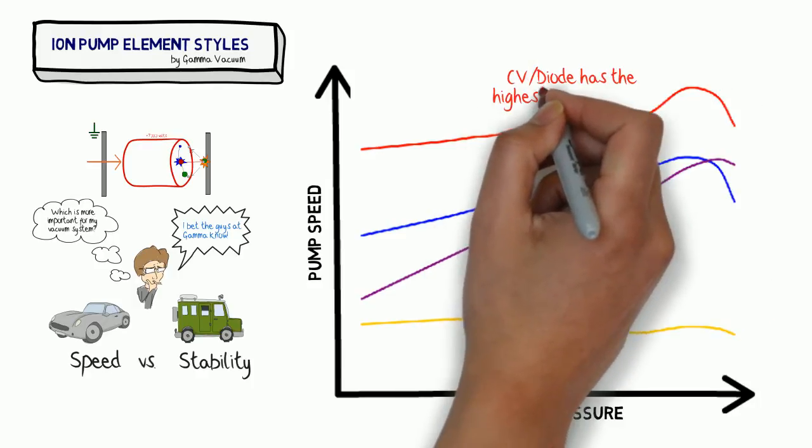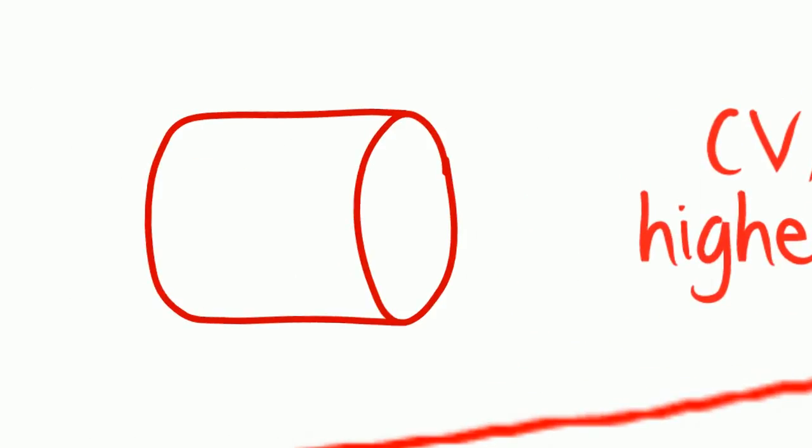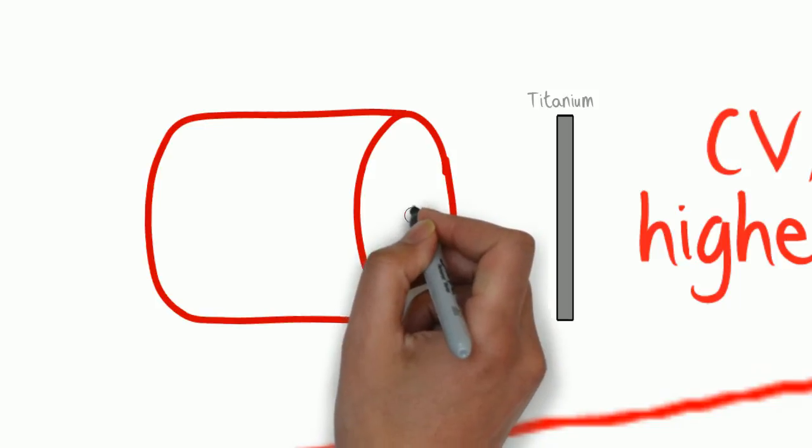And again, a reminder that the CV, which is going to be the highest pumping speed, here's the gist of how that works. You get your titanium cathode over there, which is going to be reactive with your reactive gases, oxygen.